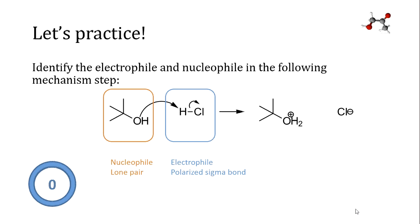It's accepting a pair of electrons from the alcohol to form a new bond to hydrogen, but the hydrogen-chlorine bond is breaking at the same time that's happening.